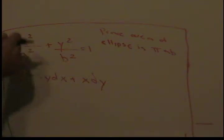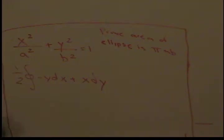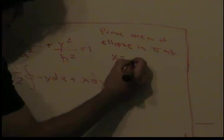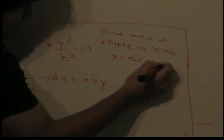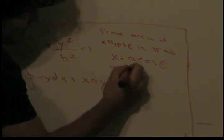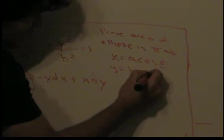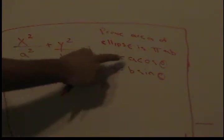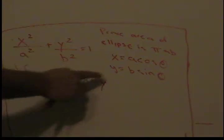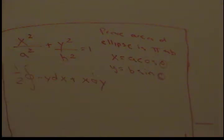The first thing you want to do is parametrize this ellipse. We know that x equals a*cos(θ) and y equals b*sin(θ), which means that the radius for x is just a and the radius for y is just b.